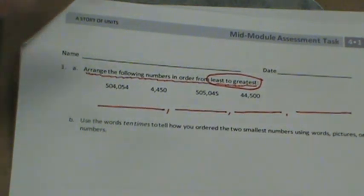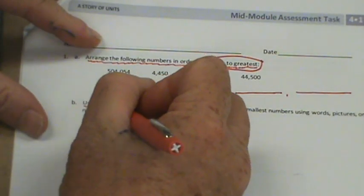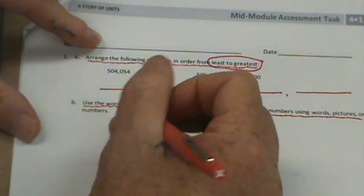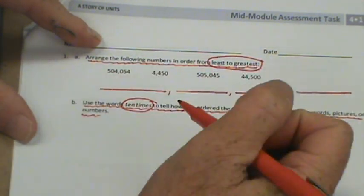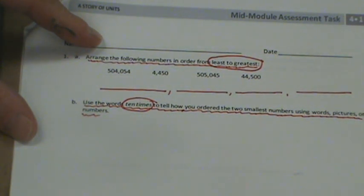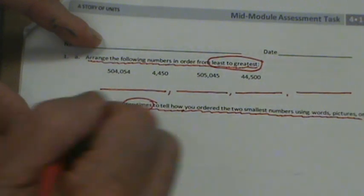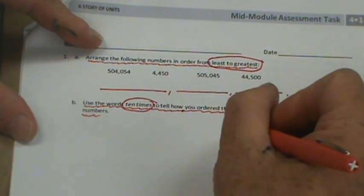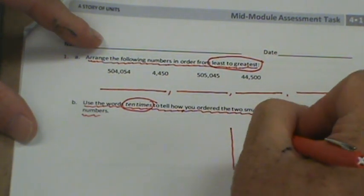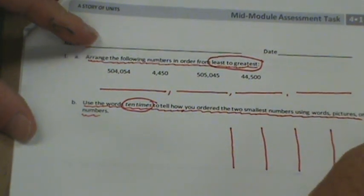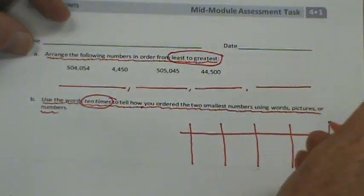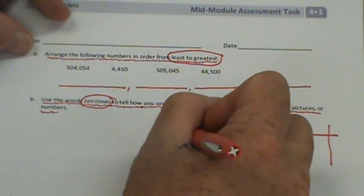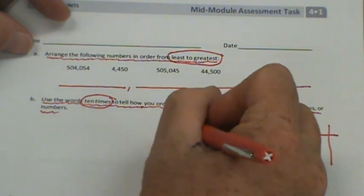Our next one is use the words ten times to tell how you ordered the two smallest numbers using words, pictures, or numbers. Ten times. So, the two smaller numbers. Let's set up a chart. A place value chart. And we're going to have the ones, tens, hundreds, thousands, and I'm going to extend this out for the ten thousands.